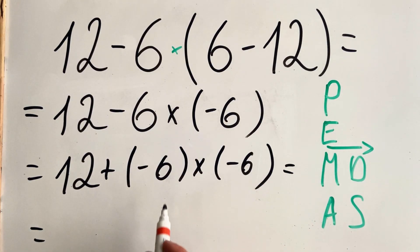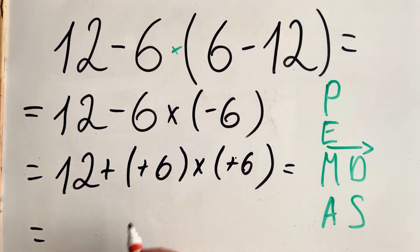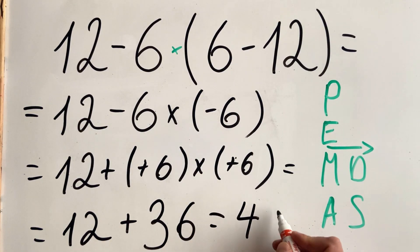So minus with minus becomes plus. So we have 12 plus, 6 multiplied by 6 is 36. And the answer is 48.